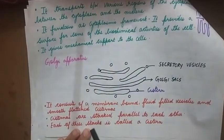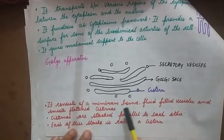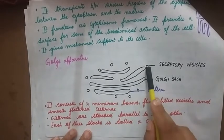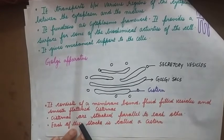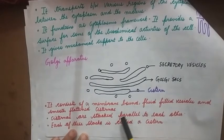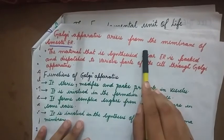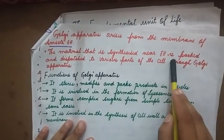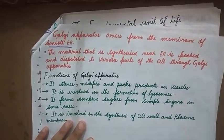Next, Golgi apparatus. This is the structure of the Golgi apparatus — these are Golgi sacs. It consists of membrane-bound fluid-filled sacs called vesicles and smooth flattened cisternae. Cisternae are stacked parallel to each other, and each of these sacs is called a cistern. The Golgi apparatus arises from the membrane of smooth endoplasmic reticulum. The material synthesized near the ER is packed and dispatched to various parts of the cell through the Golgi apparatus.